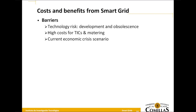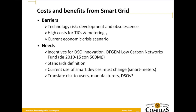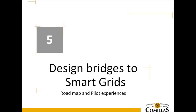To overcome these barriers, the main driver is to incentivize the distribution system operator, who will be responsible for deploying smart grids at medium and low voltage. But first, we must support manufacturers to facilitate their pathway to deploying new equipment. In order to solve these barriers, we can design bridges — roadmaps — in order to move toward smart grids.